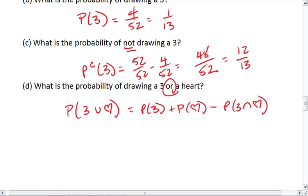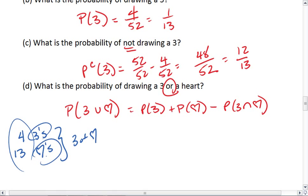In our deck of cards, we have four 3s. We have 13 hearts. But of this entire thing, there is one card that is a 3 of hearts. So we can't just add these numbers together because that 3 of hearts gets counted twice. It gets counted with the 3s, and it gets counted with the hearts.